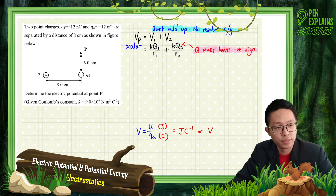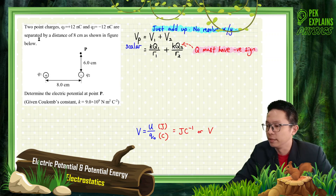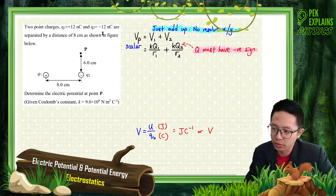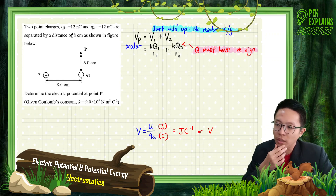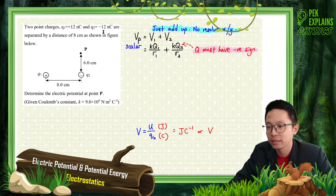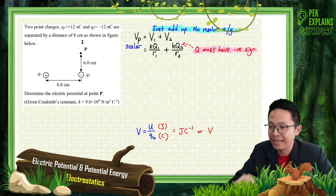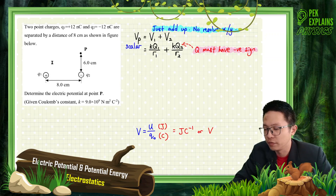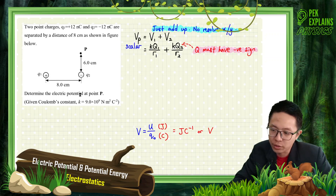Now, questions for electric potential and potential energy. Two point charges, Q1 and Q2 — one is positive 12 nanocoulombs, another one is negative 12 nanocoulombs — are separated by a distance of 8 cm, as shown in the figure below. Determine the electric potential at point P.